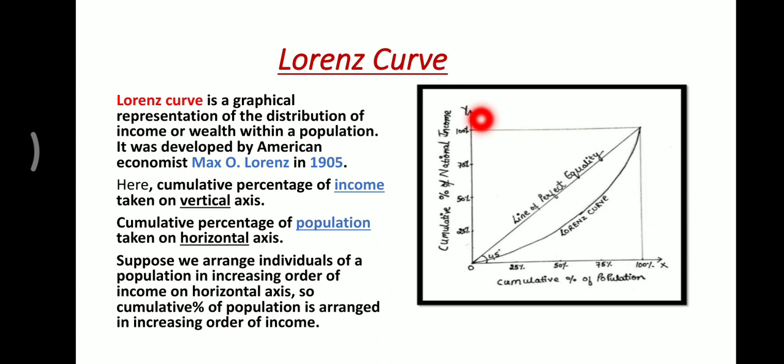In this diagram, on the y-axis we have taken the cumulative percentage of national income, and on the x-axis we are taking the cumulative percentage of population. Individuals or population are arranged in increasing order of income on the horizontal axis, so the cumulative percentage of population is arranged in increasing order of income.